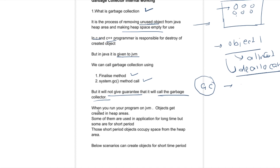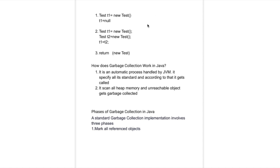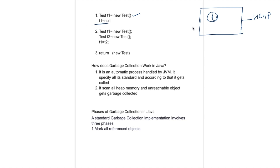When you run your program on JVM, objects get created and stored into the heap area. Some of them are long-lived and some of them are short-lived. Those short-lived objects occupy memory from the heap area. In our application, when we create objects, those objects get stored into the heap area. When we assign t1 = null, that means you are removing the reference from that object — previously it was referenced by your application, but now you are removing that reference.